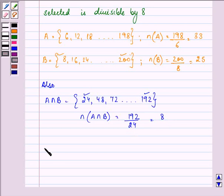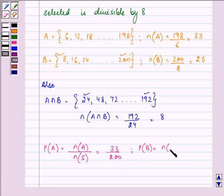So, probability of A is equal to number of elements in set A upon number of elements in sample space, that is 33 upon 200. Similarly, probability of B is equal to n(B) upon n(S), that is equal to 25 upon 200.